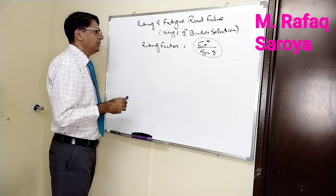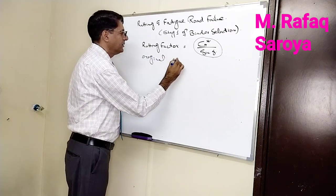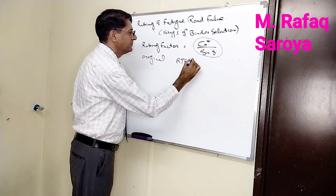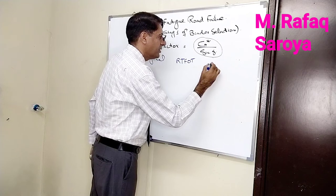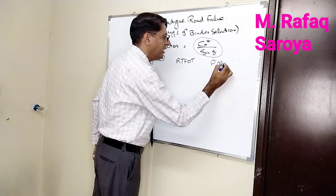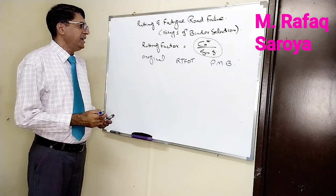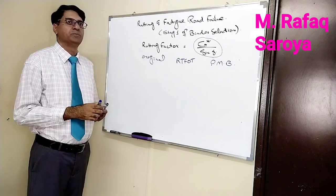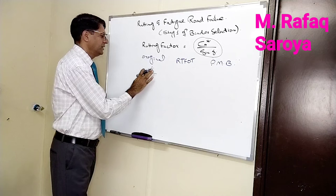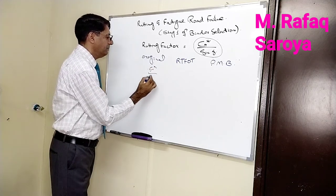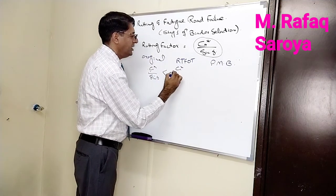Just for your understanding, we have three types of material: original material, RTFOT material, and polymer modified binder (PMB). Compared to original, the RTFOT aged binder has g star by sine delta less than original, meaning this material is going to possess more elastic behavior.